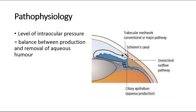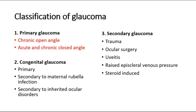This second drainage route is called the uveoscleral pathway. Regarding classification, glaucoma can be classified into primary or secondary glaucoma, and also congenital glaucoma which is present since birth. Primary glaucoma includes chronic open angle glaucoma and acute and chronic close angle glaucoma, which are the main focus of this presentation.